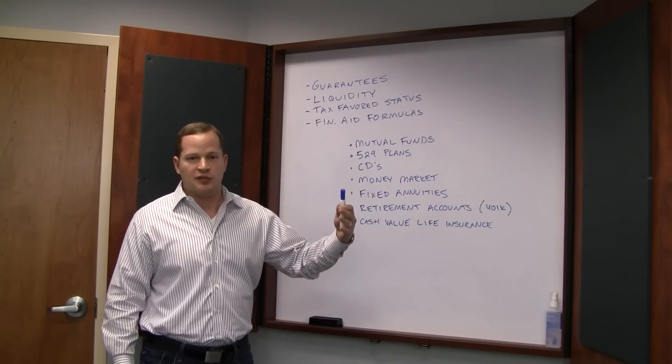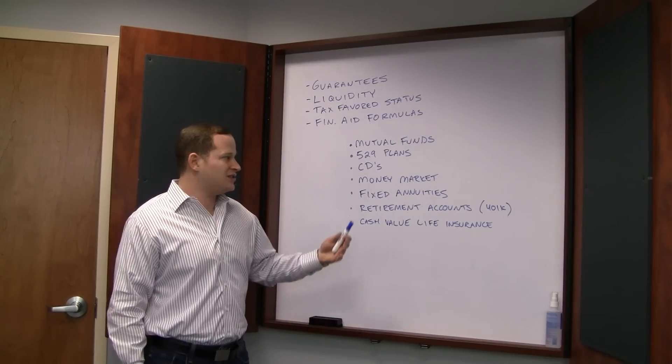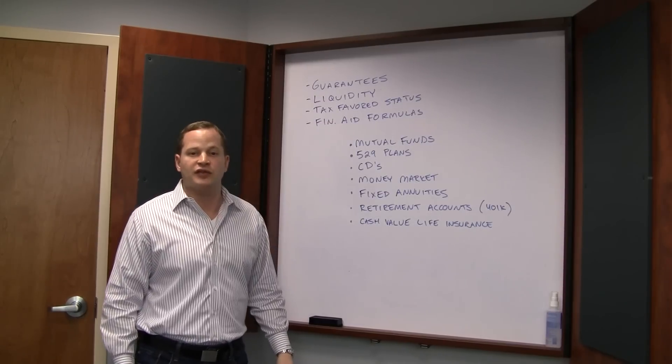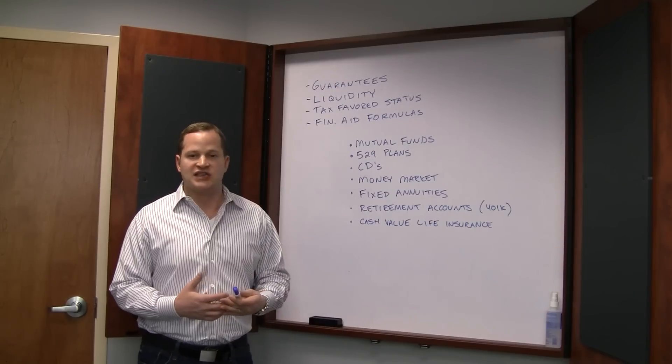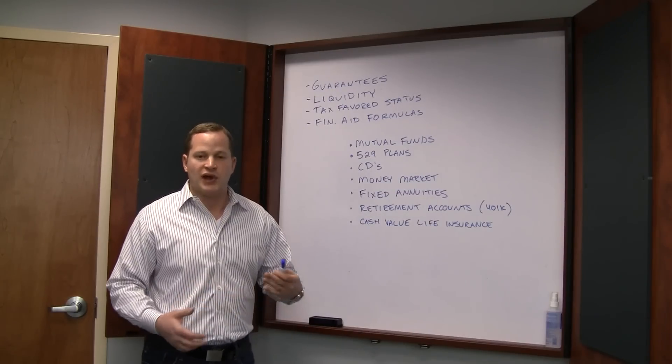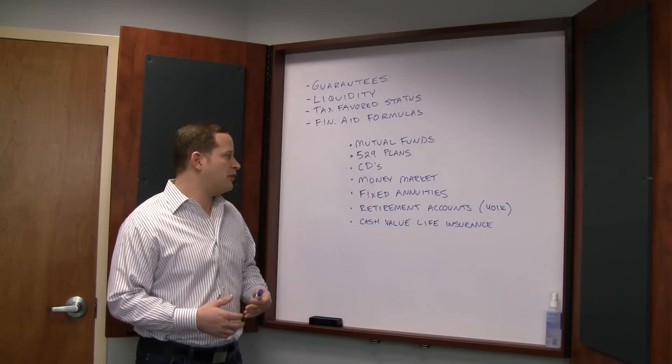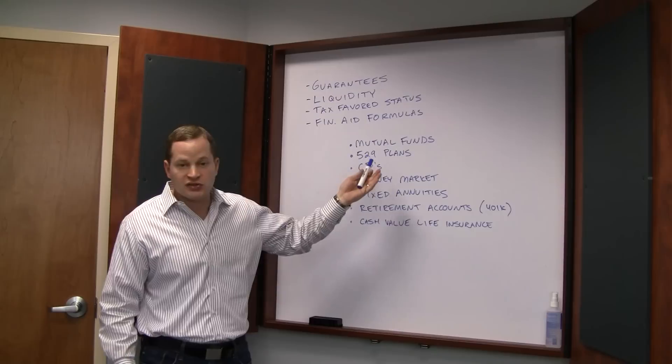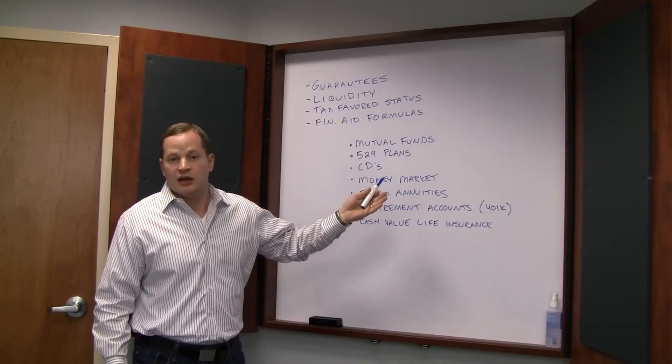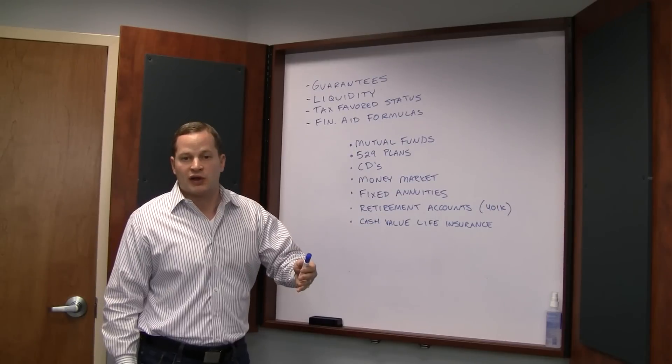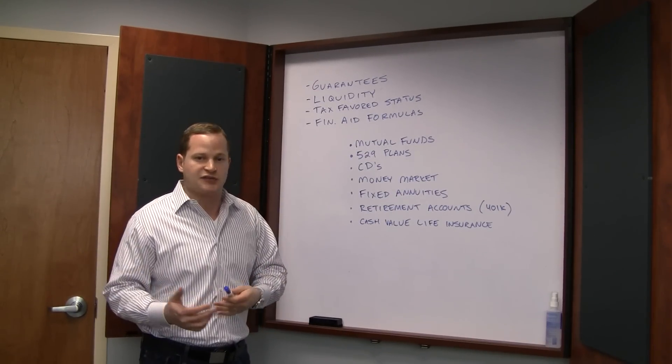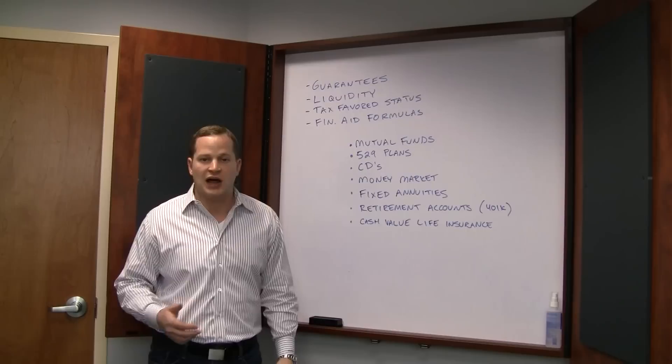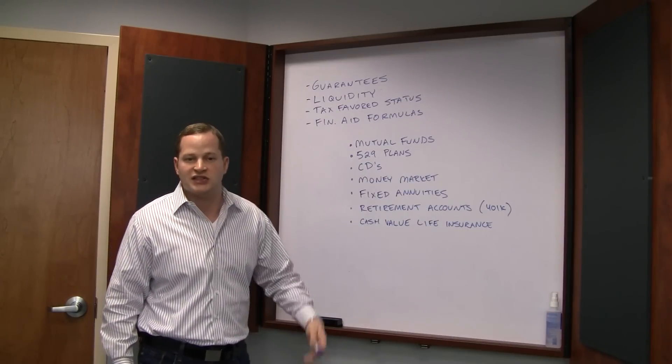Some of the downsides are that there's typically high fees involved in the 529 plans. You're only able to access the money for college, otherwise you pay a penalty and taxes on top of it. Some of the pros of a 529 are that if you do use the money for college and everything works out and the money's there and it's grown, then you get access to the money tax-free, so that is a benefit. Just a lot of these plans haven't seen any kind of gains in them, so you've got to weigh that out.